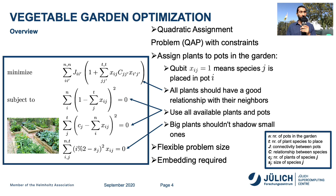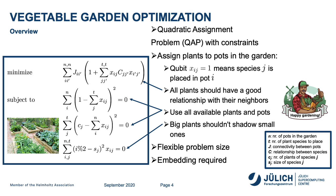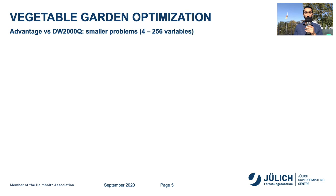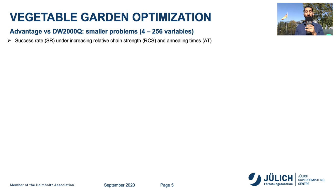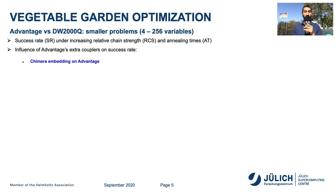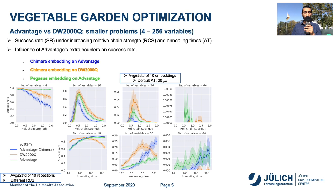These problems require an embedding on the quantum devices we implement them on. Here are the results of smaller problems consisting of 4 to 256 variables tested on Advantage and D-Wave 2000Q, where we record the success rate under increasing relative chain strength and annealing times. We also seek to observe the influence of advantageous extra couplers on the success rate when Chimera embedding is on Advantage, Chimera embedding is on D-Wave 2000Q, and Pegasus embedding is on Advantage.